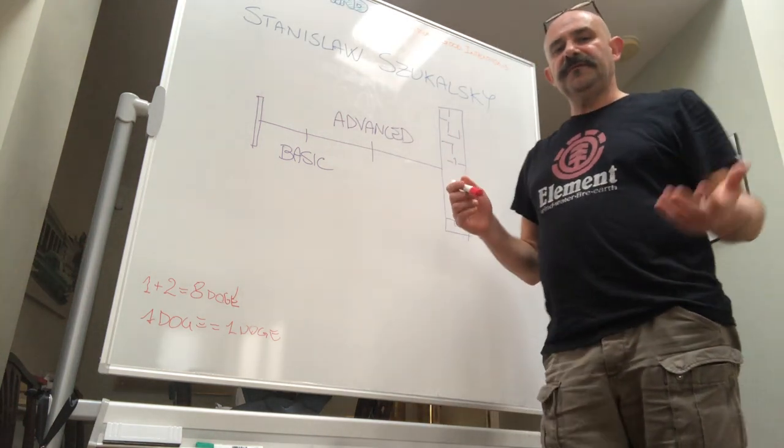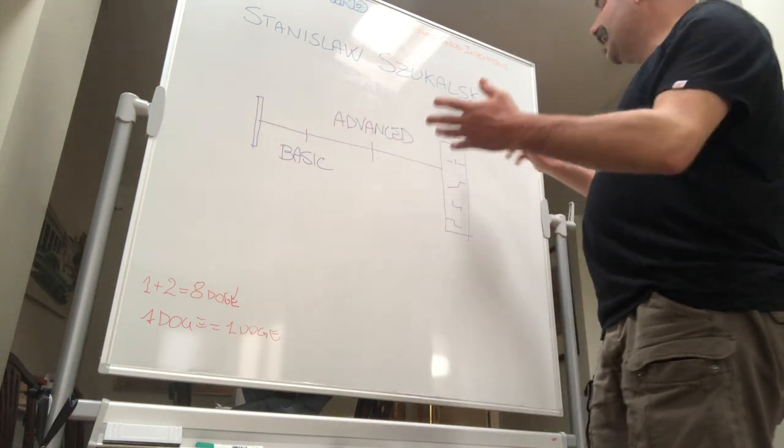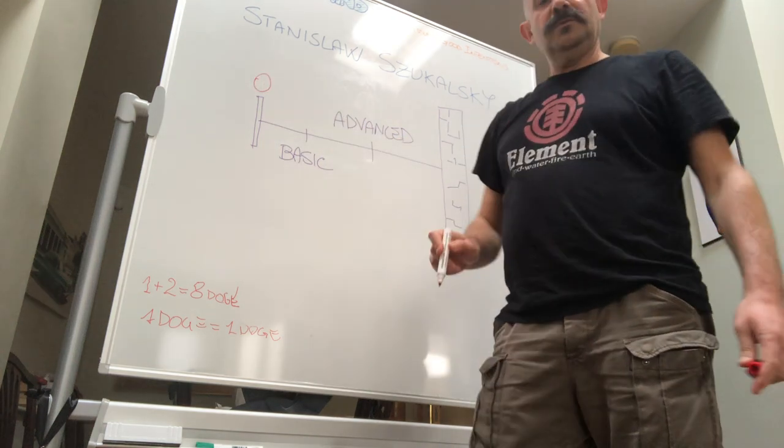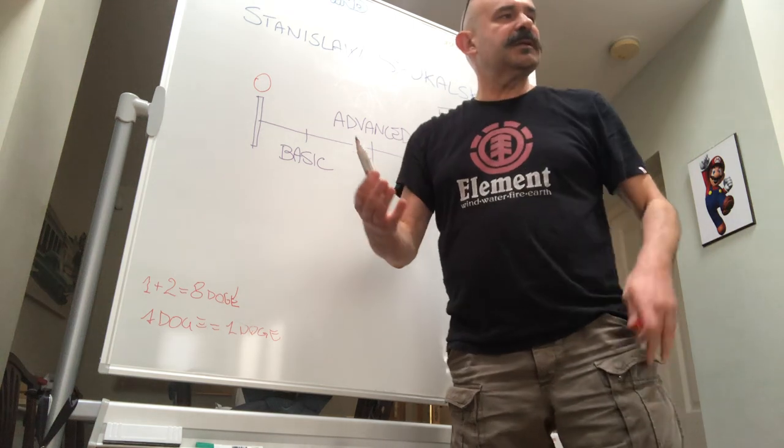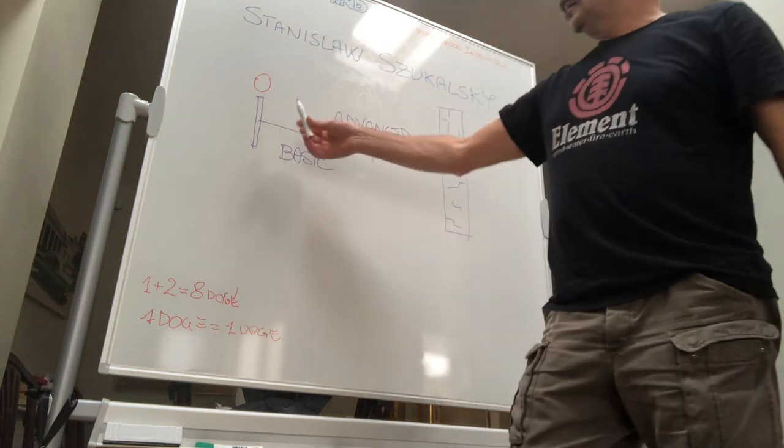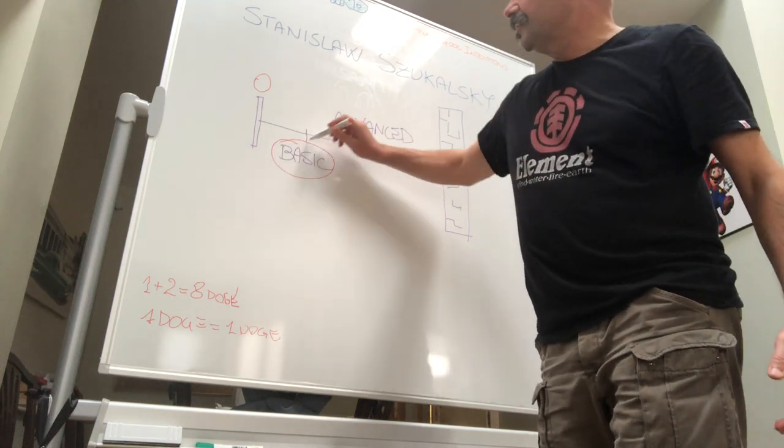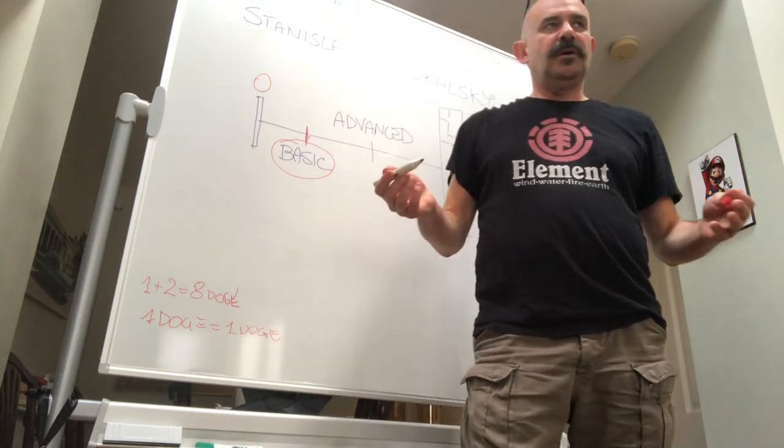We learn by going through different phases. I see this on a line segment. We start with zero - we know nothing when we're born. Then when we start studying a subject, quite quickly we get to a basic point of knowledge. Everybody can get to a basic point of knowledge on any subject.